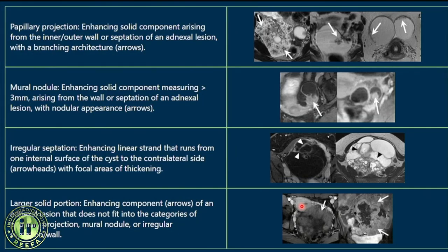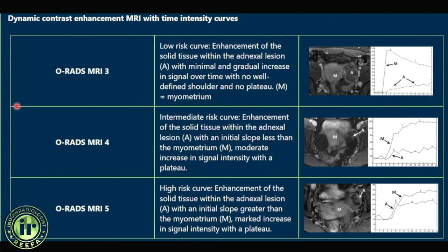To clarify papillary projection versus mural nodule: a papillary projection is an enhancing solid component arising from the inner or outer wall or septa of an adnexal lesion with a branching architecture. A mural nodule is a simple solid nodule greater than three millimeters in size within the lesion.